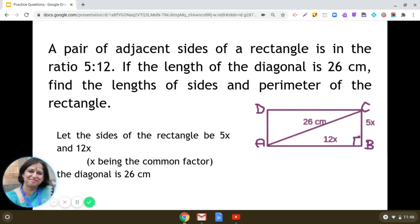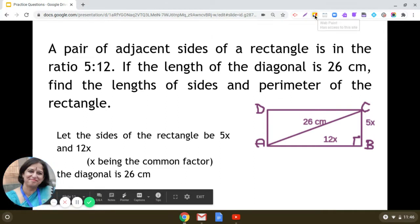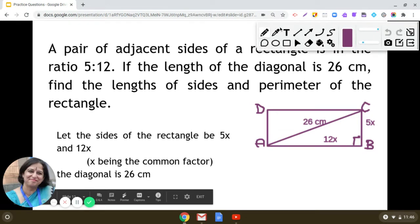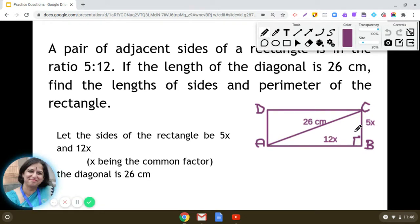find the length of the sides and perimeter of the rectangle. So here you can see that we have taken a rectangle ABCD, and in this rectangle ABCD, breadth is marked as 5x and the length is marked as 12x. You know why? Because it's given that the adjacent sides of the rectangle, they are in the ratio 5 is to 12. We have taken x as the common factor. So breadth is BC that is equal to 5x and the length is AB that is equal to 12x.